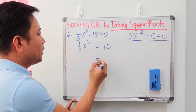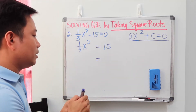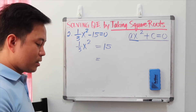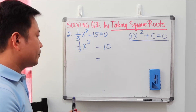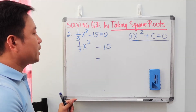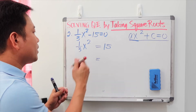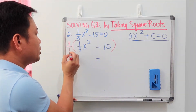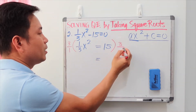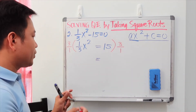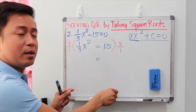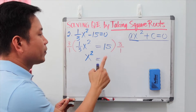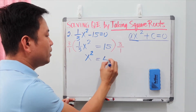To make the left side equal to x squared alone, we need to eliminate the coefficient of one-third. We can divide both sides by one-third, which is the same as multiplying both sides by the reciprocal, 3 over 1. When we multiply one-third by 3 over 1 we get 1, so x squared equals 15 times 3, which is 45.